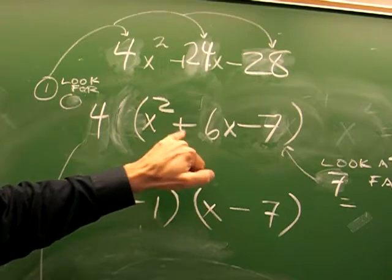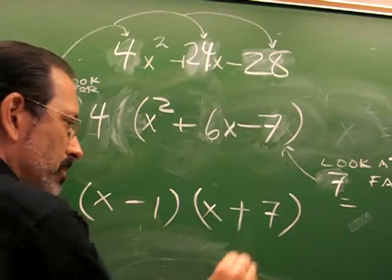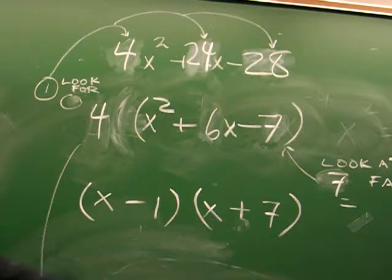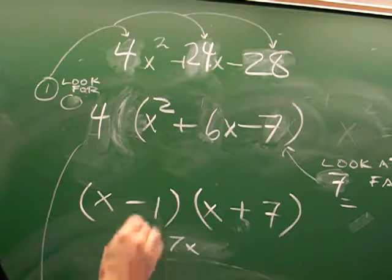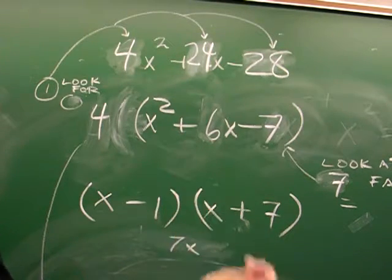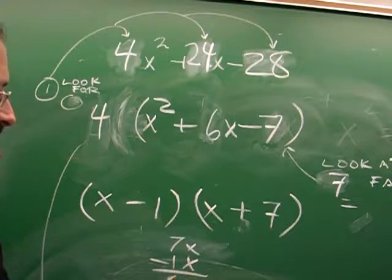Now, this is large, so I'm going to make it plus 7. If I go 7 times x, that's 7x. Negative 1 times x, negative 1. There's our 6x.